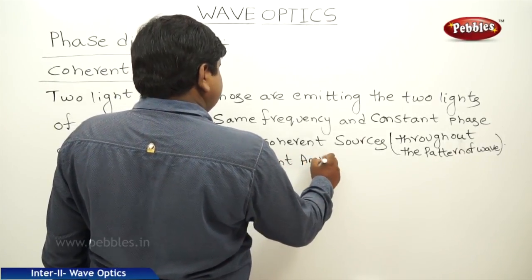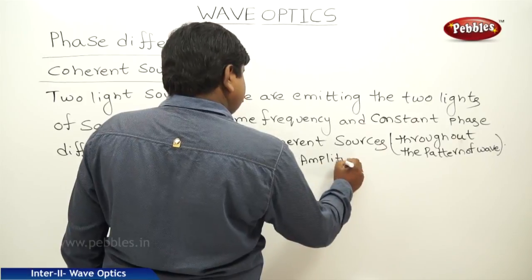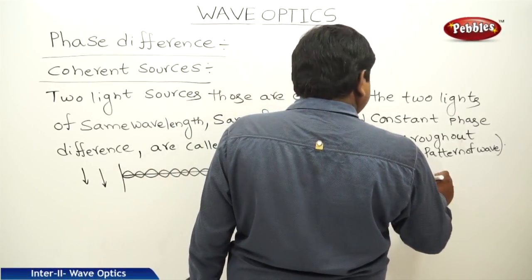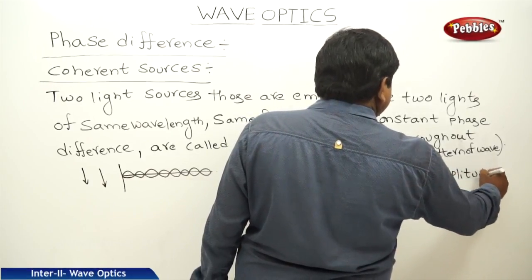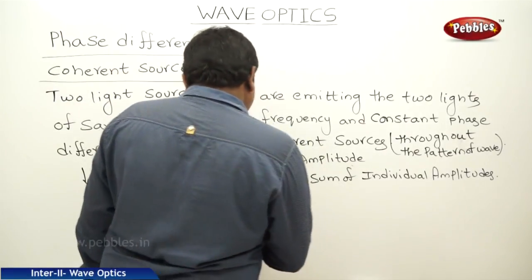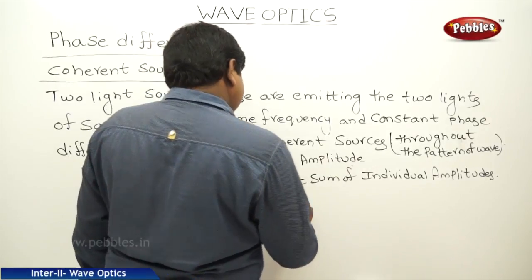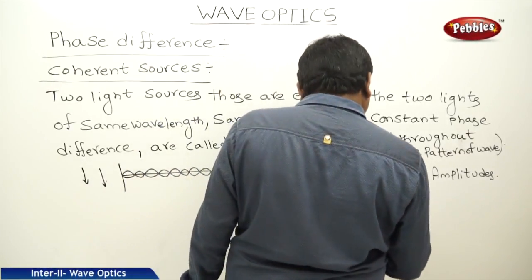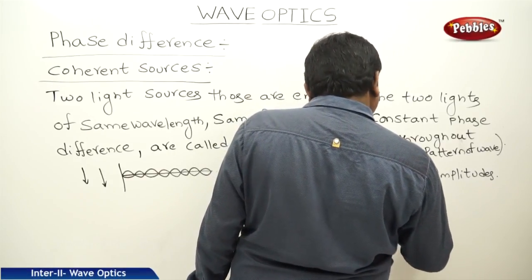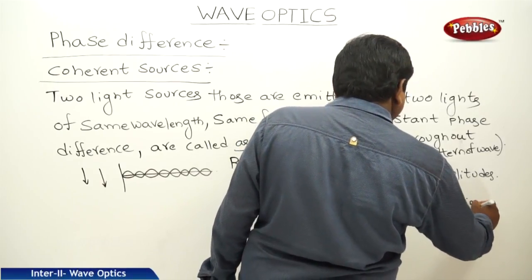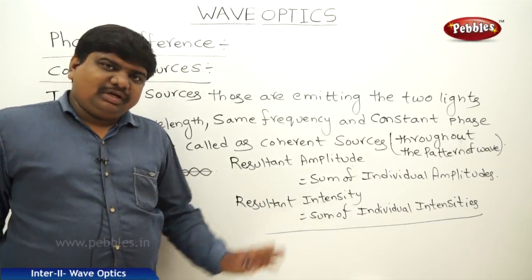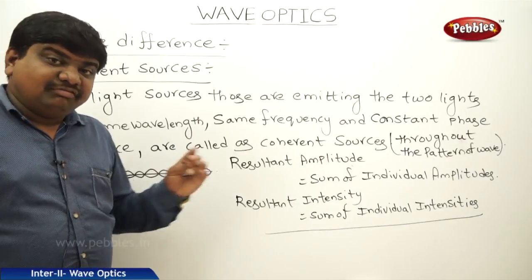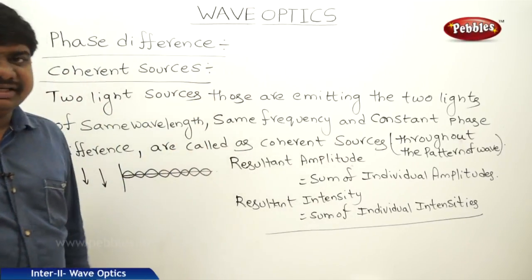The resultant amplitude is equal to the sum of individual intensities — meaning no subtraction, only addition. In the case of coherent sources, amplitude, intensity, and all physical parameters related to the wave are added, so we get the maximum strength of the signal.